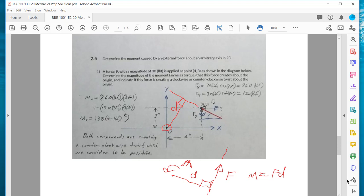So F sub Y has a moment arm of four inches. Here's its line of action, F sub Y. There's the perpendicular distance to F sub Y. That's why we have F sub Y, which is 15, times the four inches. And then F sub X, its perpendicular distance to its line of action is three inches. So that's why we take the 26 times three. And they're both creating a counterclockwise twist.